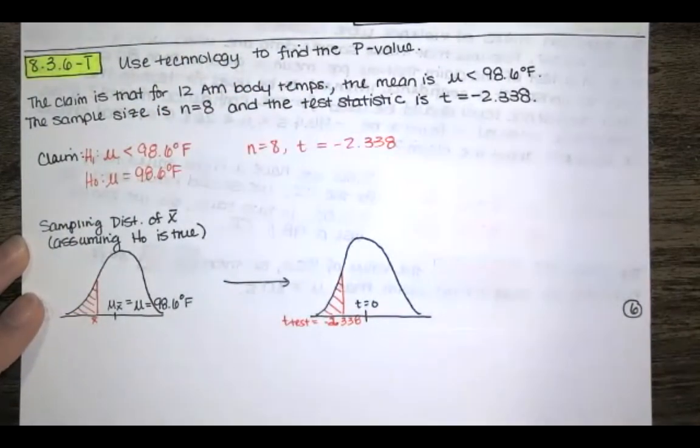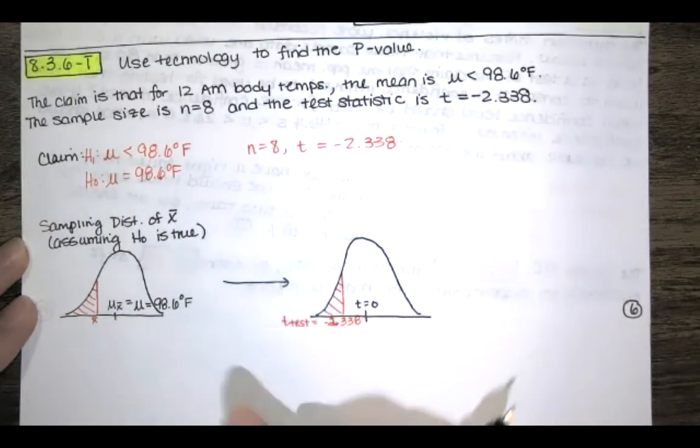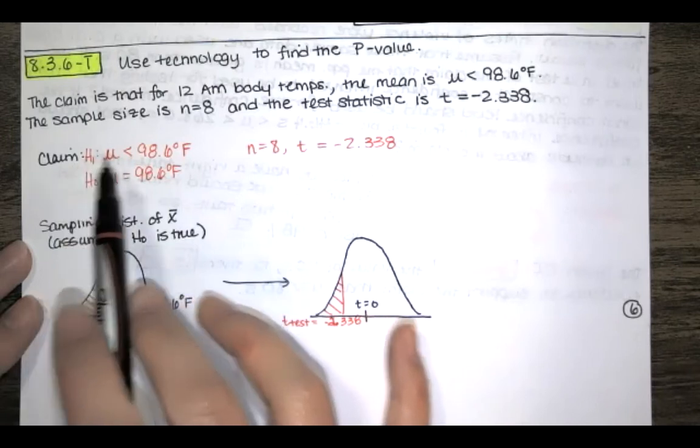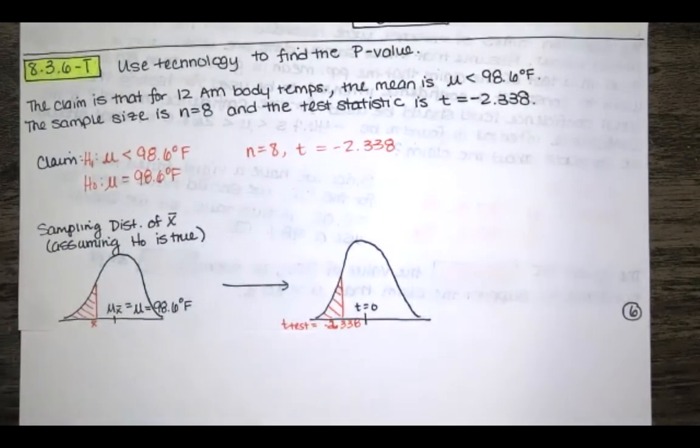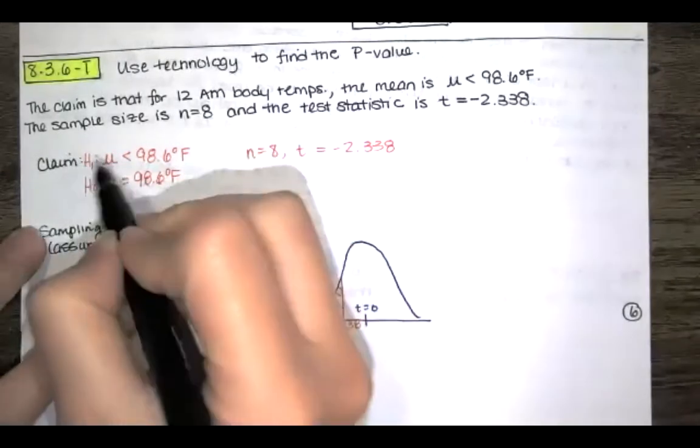Then remember what it is we're doing. If we're trying to find the p-value, that means we want the area beyond that test statistic. Now, we might have to double that area if it's a two-tailed test. The first thing we need to do after we state the alternative hypothesis and the null hypothesis is we identify whether it's a two-tailed test or a one-tailed test.